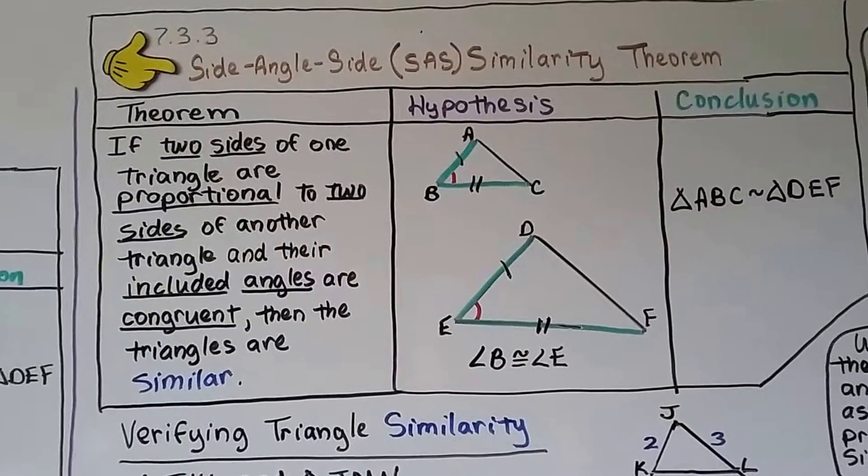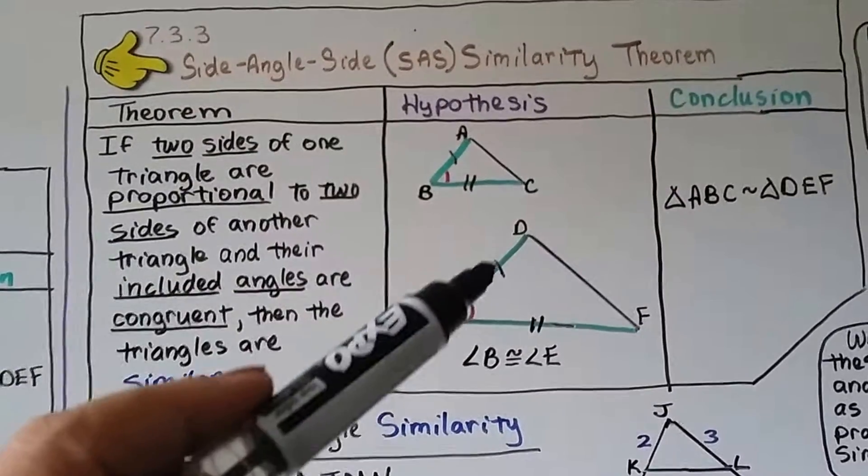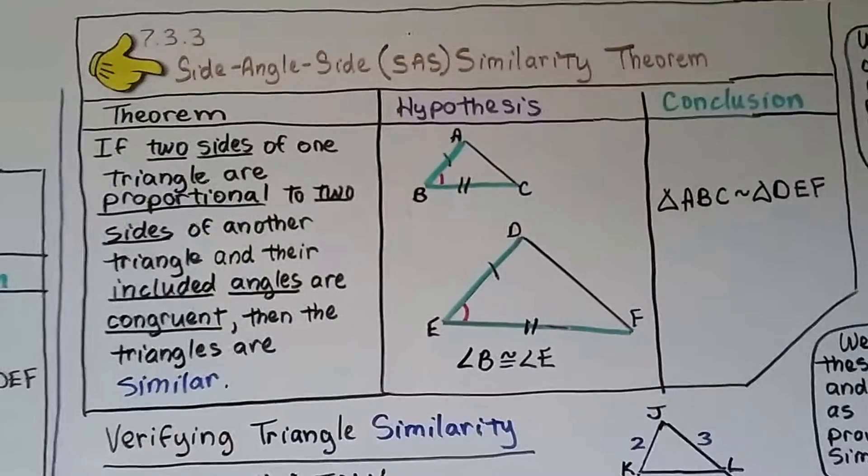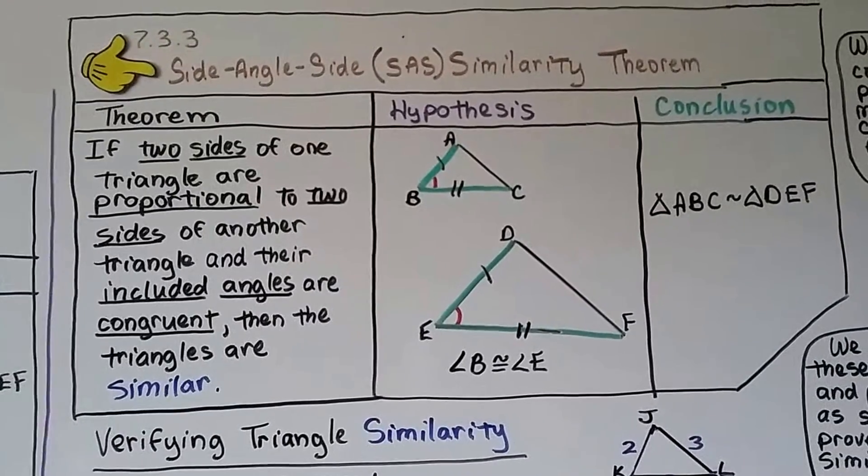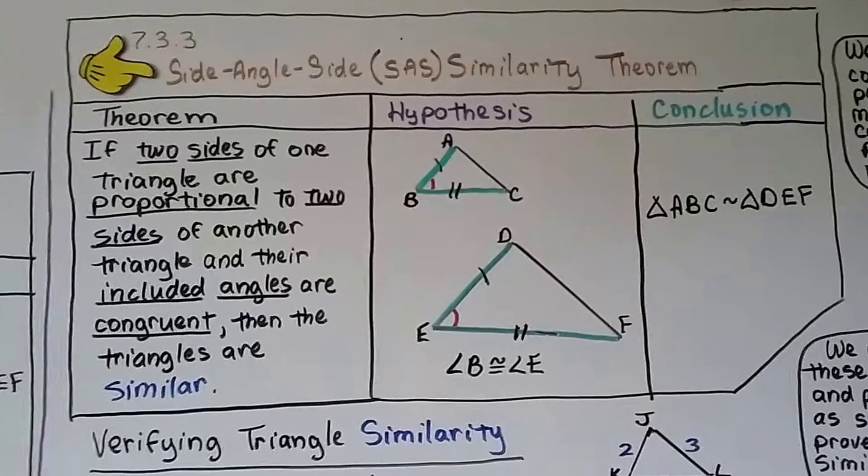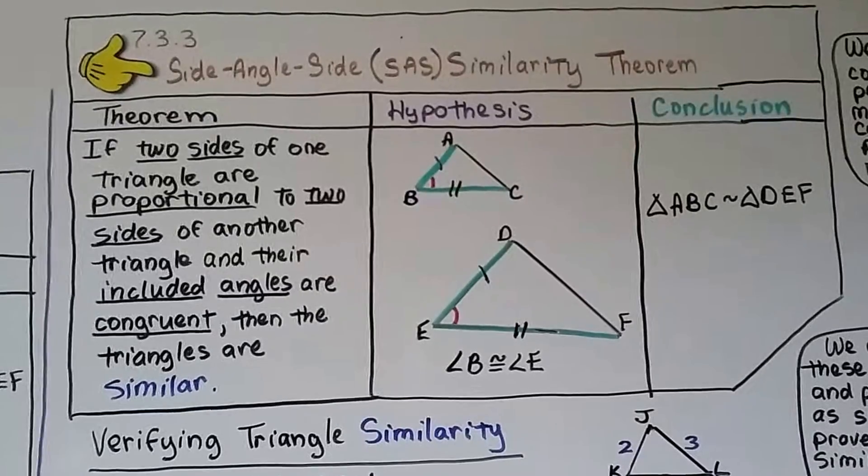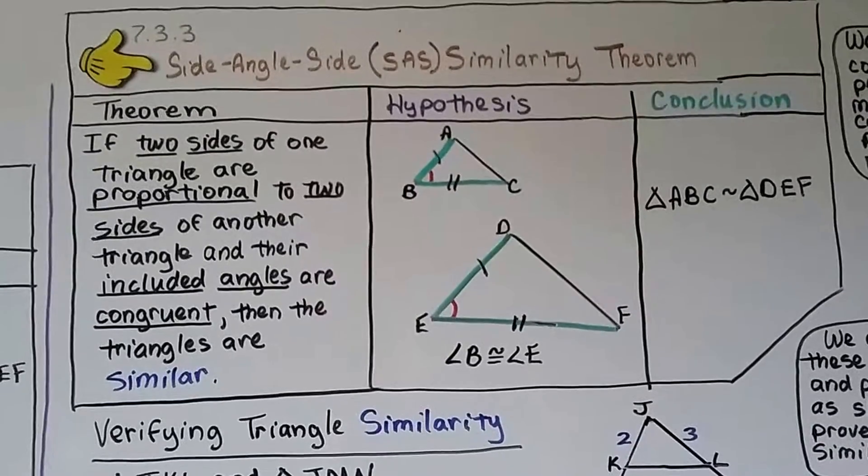Then the triangles are similar. Remember, the included angles are the ones that are between those two sides. So angle B is congruent to angle E. And our conclusion is that triangle ABC is similar to triangle DEF.